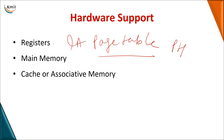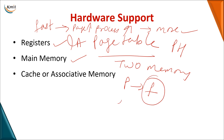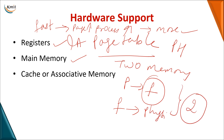Where do you store the page table? It can be stored in registers, which gives faster access. However, as the process size increases, page table entries increase, requiring more registers — which is not practically feasible. The second method is storing the page table in main memory, but this requires two memory accesses: one to get the frame number from the page table, and a second to fetch the actual data. Two memory accesses for every page access is not always efficient.